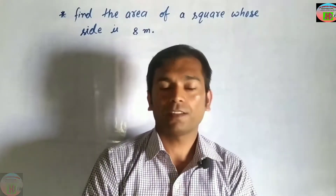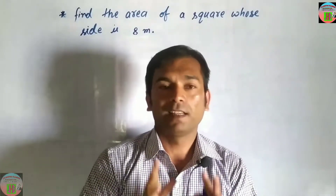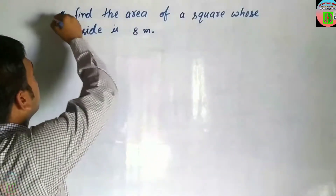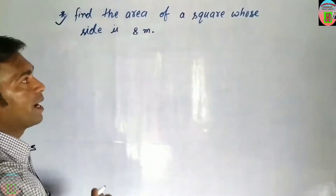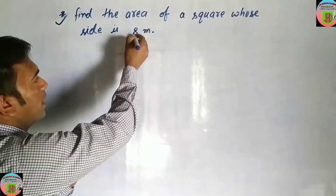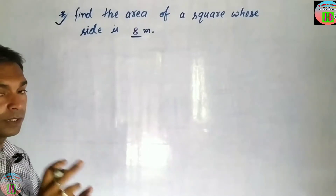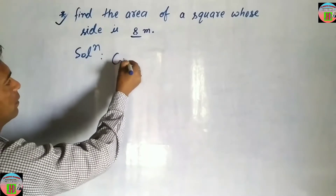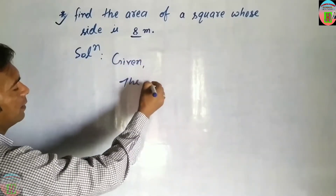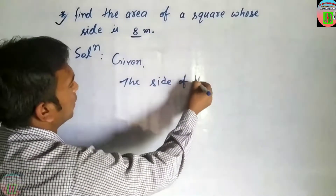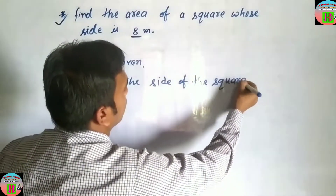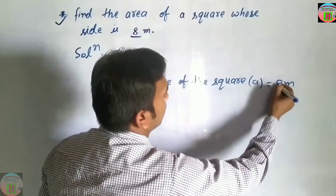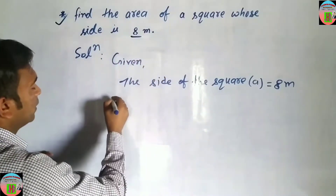Today we are going to learn how to find the area of a square if one side is given. See this question: find the area of a square whose side is 8 meter. Write here 'Solution', 'Given'. What is given? The side of the square, it is denoted by a, that is 8 meter. Write here a equal to 8 meter.